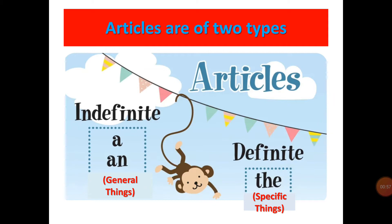In indefinite articles, we use a and an to make a sentence with general things — a boy, a penguin, a notebook. And in definite articles, we use the to make a sentence with specific things — the Taj Mahal, the Mount Everest, like this.